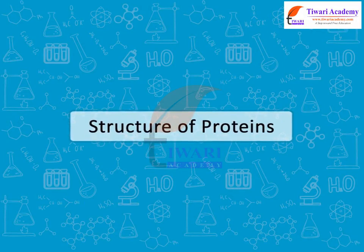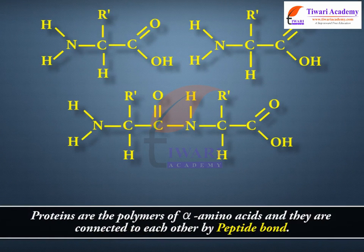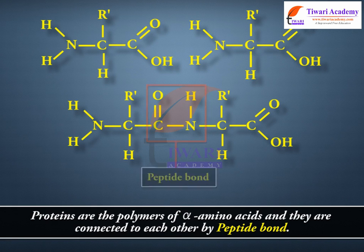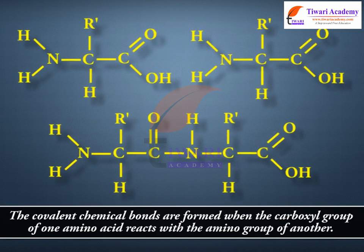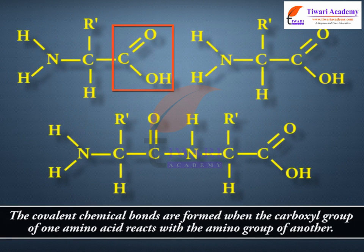Structure of proteins. Proteins are the polymers of alpha amino acids, and they are connected to each other by peptide bond. The covalent chemical bonds are formed when the carboxyl group of one amino acid reacts with the amino group of another.